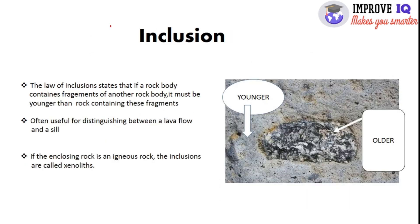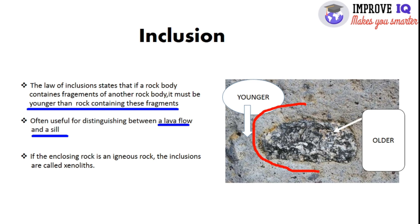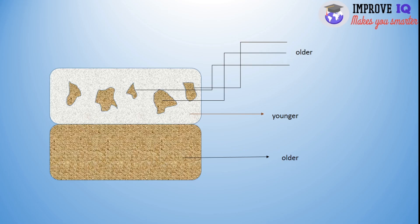The law of inclusion states that if a rock body contains fragments of another rock body, it must be younger than the rock containing those fragments. It is often useful for distinguishing between a lava flow and a sill. If the enclosing rock is an igneous rock, the inclusions are called xenoliths. The surrounding rock is younger while the included rock is older. The rock which is included is always older, while the surrounding one is younger.